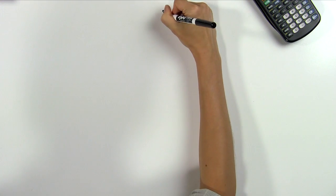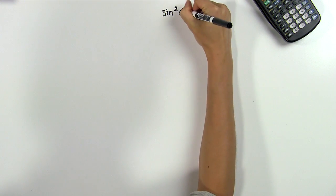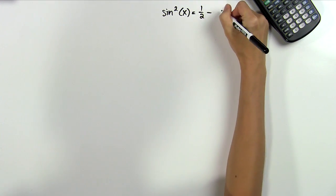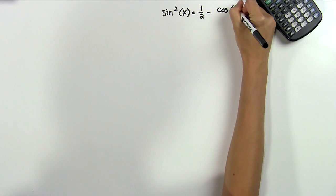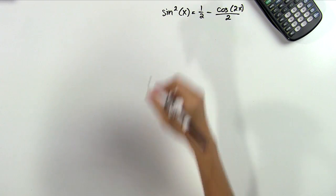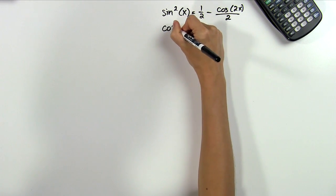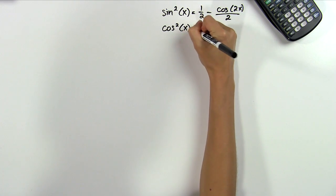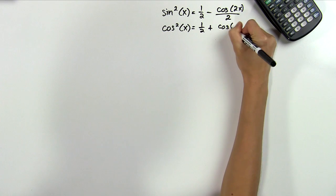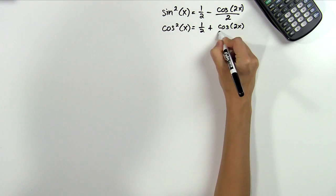Now to integrate even powers of sine and cosine, we'll use two other properties. Sine squared x is equal to 1 half minus cosine of 2x divided by 2. And the second one is very similar. It's cosine squared x is equal to 1 half plus cosine of 2x divided by 2.